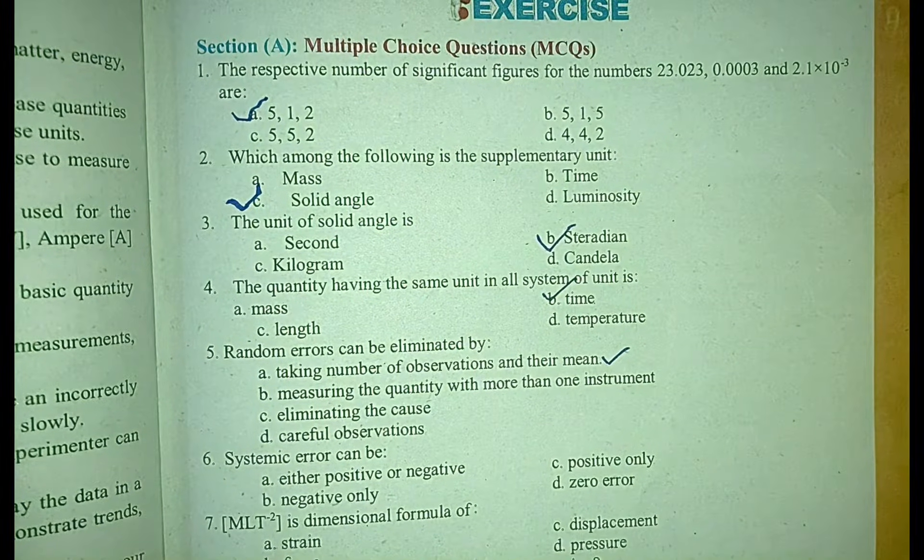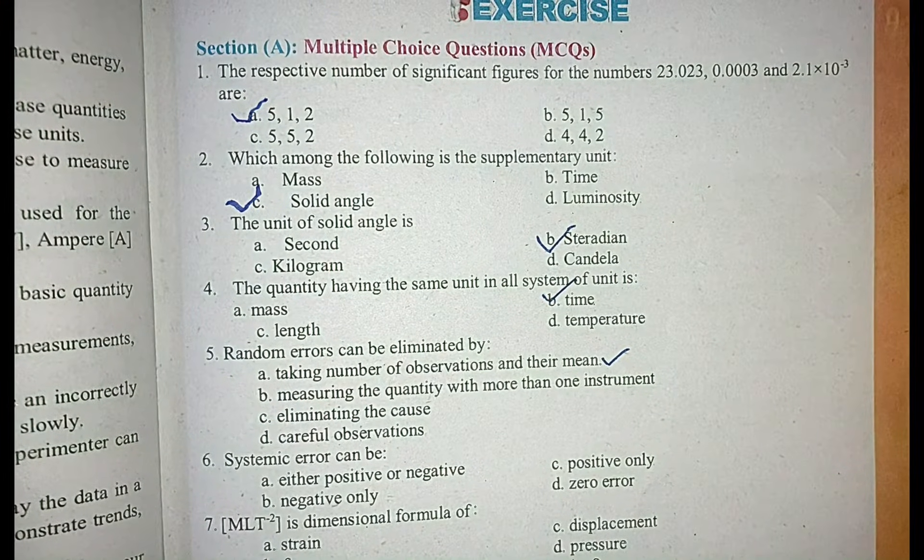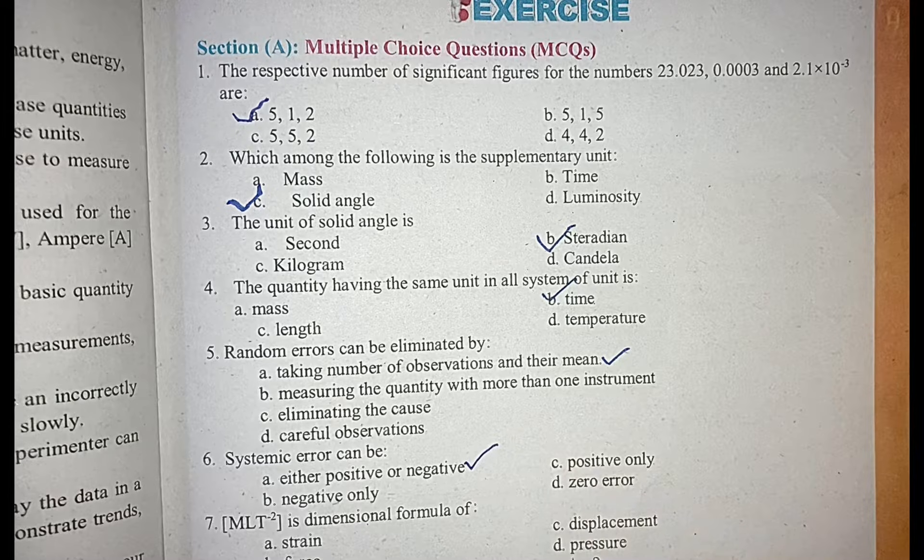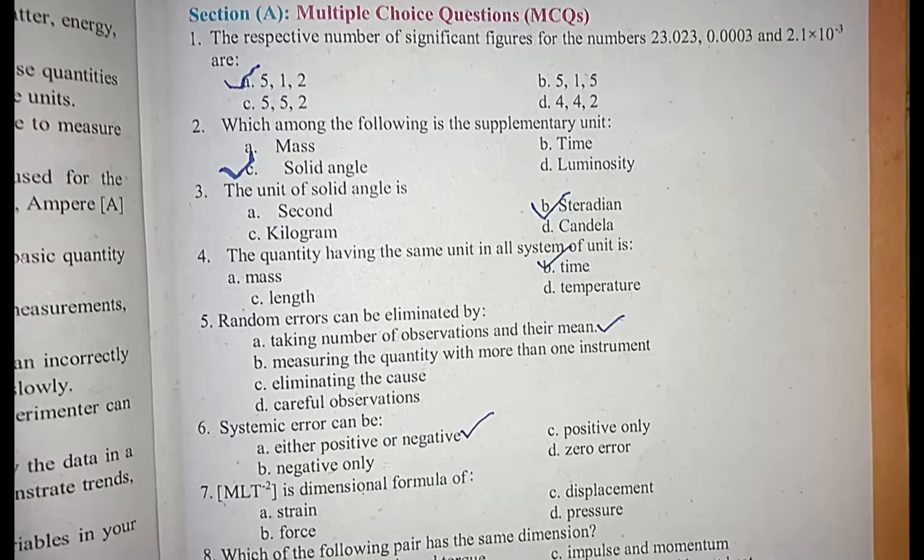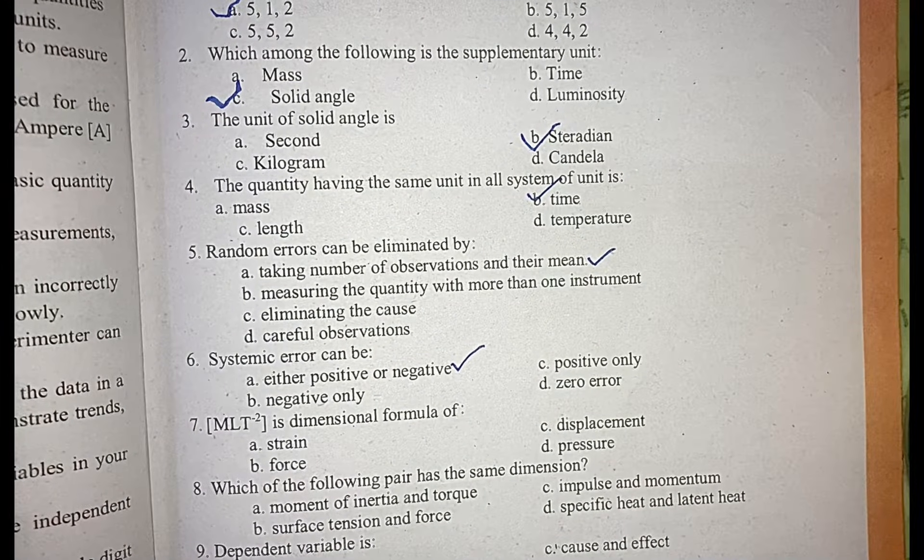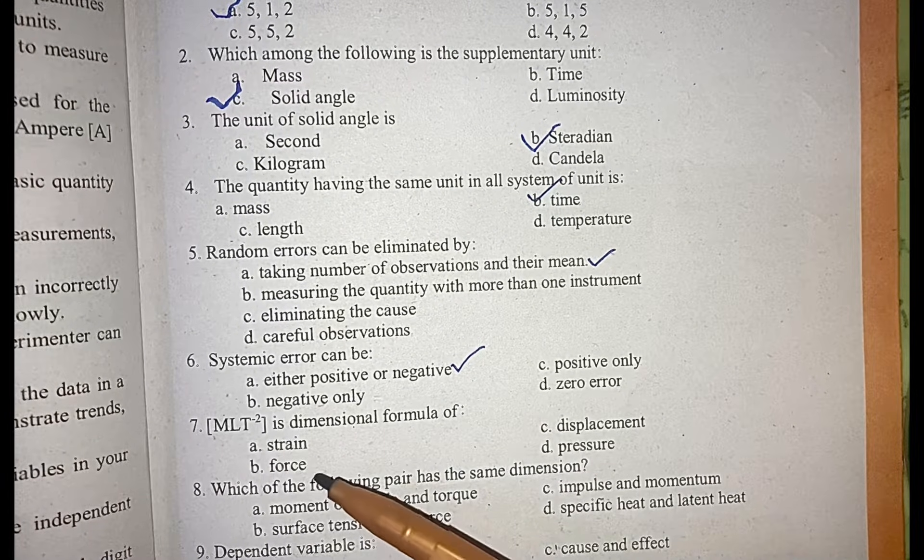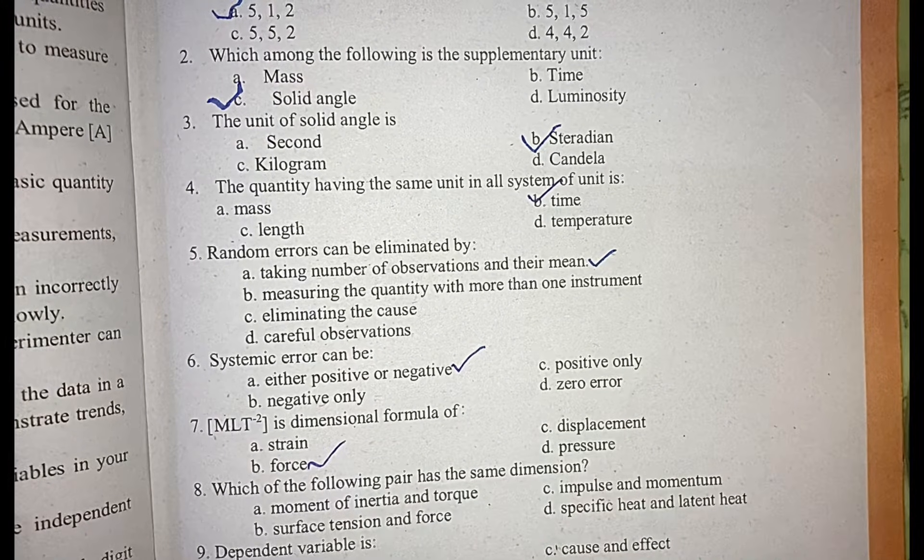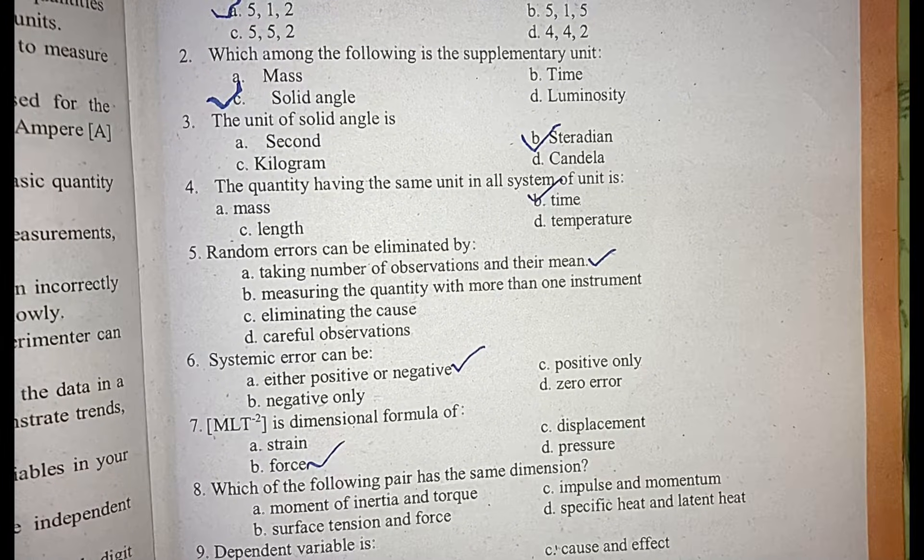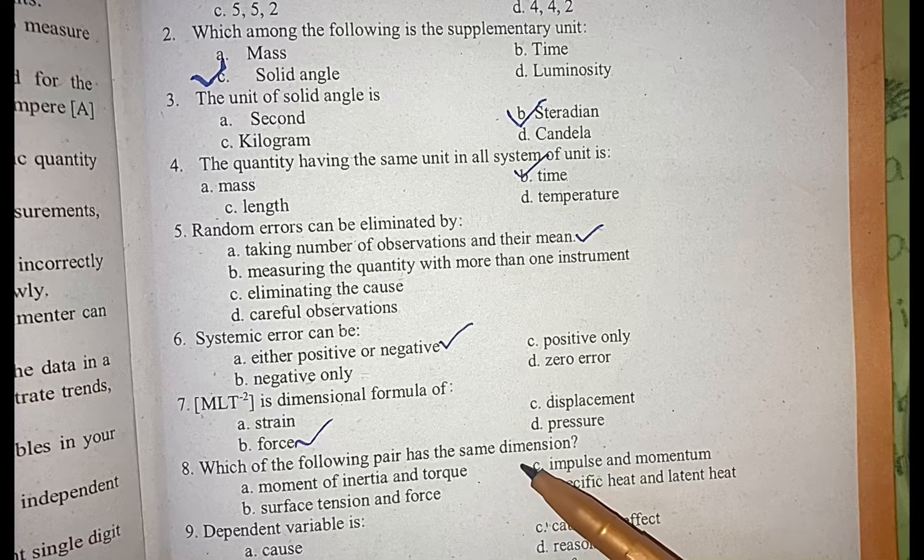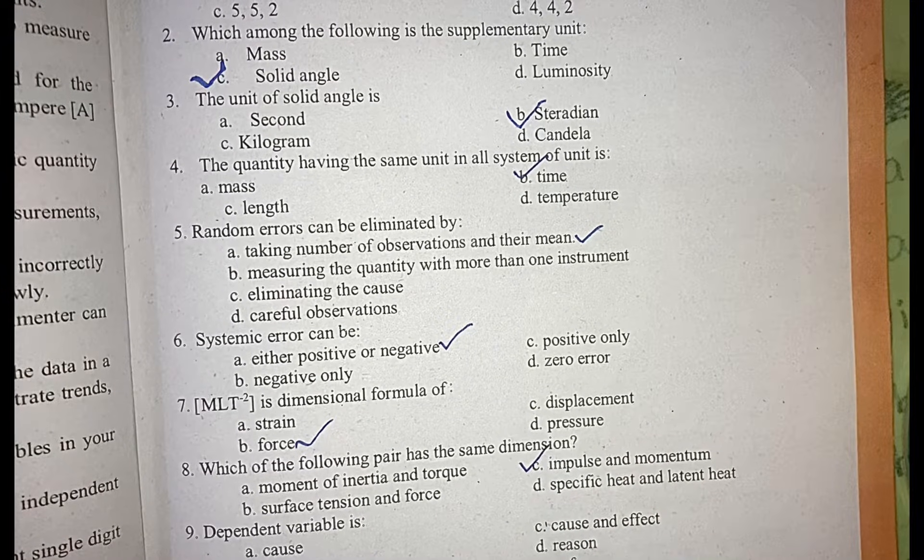MCQ number 6: systematic error can be either positive or negative. MCQ number 7: MLT power minus 2 is dimensional formula of force. MCQ number 8: which of the following pair has the same dimension? Impulse and momentum.